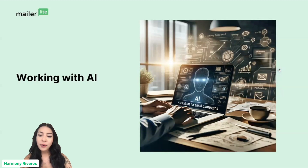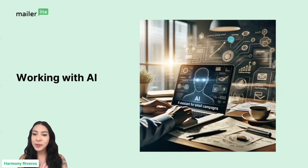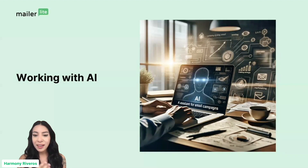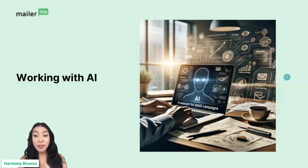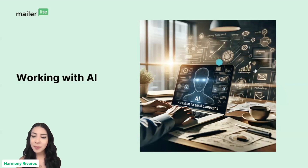Let's talk about working with AI — how to talk to it, how to get good responses, how to use prompts. This image I actually created using AI. There's a system called DALL-E, which is an image-generating system. I typed in something like 'generate an image of an email marketer using artificial intelligence' and this is what it came up with. So there are many uses with AI, not only with text but also with images.